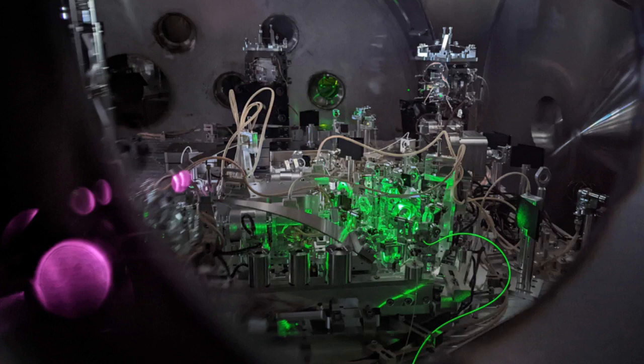Now, LIGO's new frequency-dependent optical cavities — long tubes about the length of three football fields — allow the team to squeeze light in different ways depending on the frequency of gravitational waves of interest, thereby reducing noise across the whole LIGO frequency range.